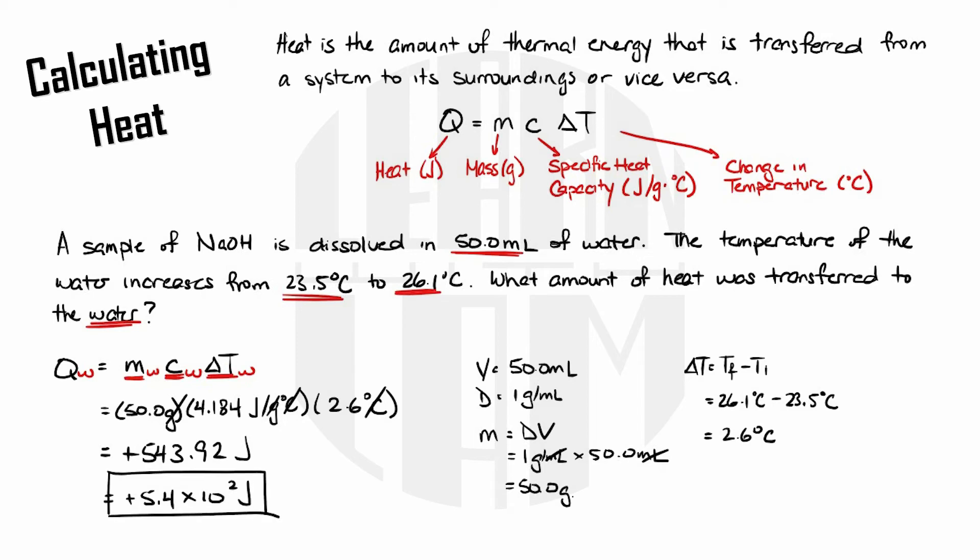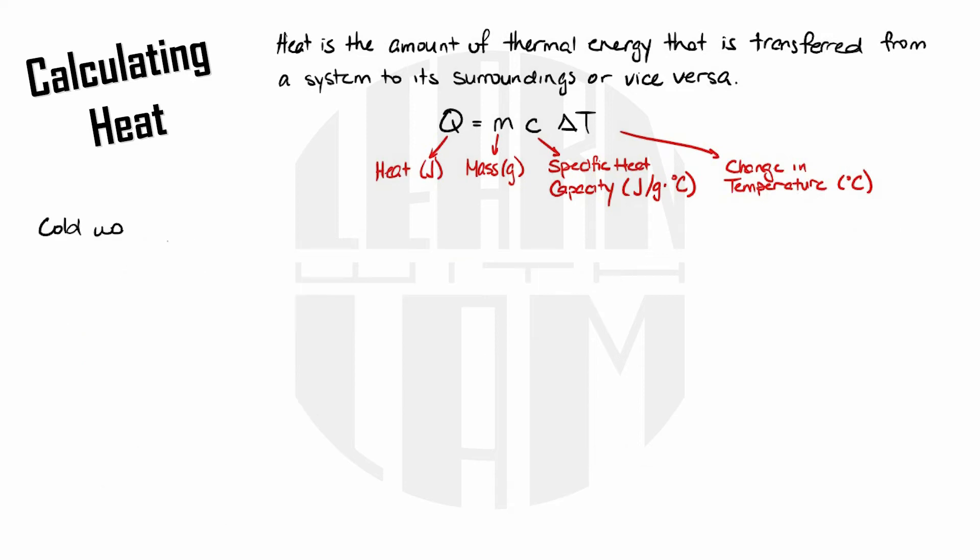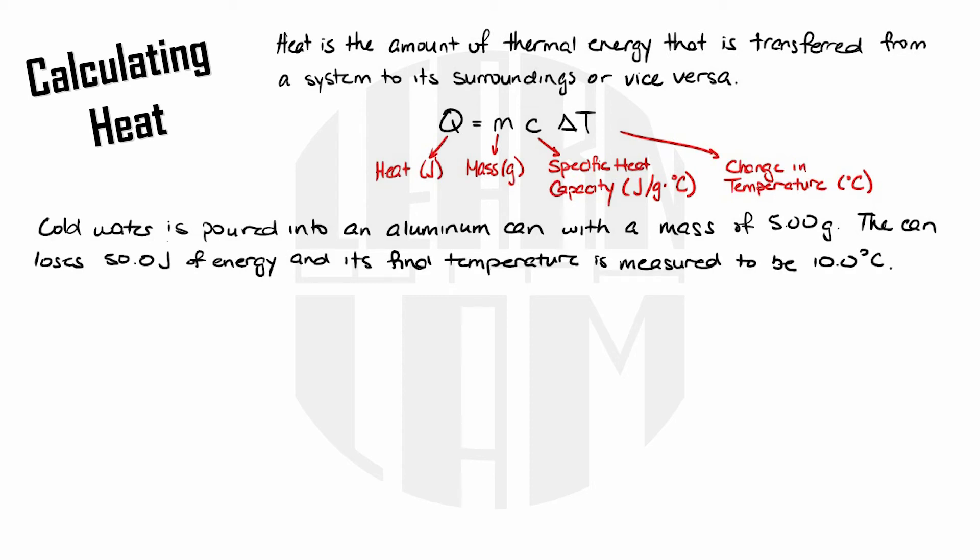But this isn't the only type of heat question that you may get. Let's look at another problem. Cold water is poured into an aluminum can with a mass of 5.00 grams. The can loses 50.0 joules of energy and its final temperature is measured to be 10.0 degrees Celsius. What was the cans initial temperature?